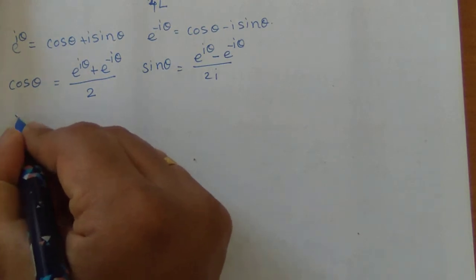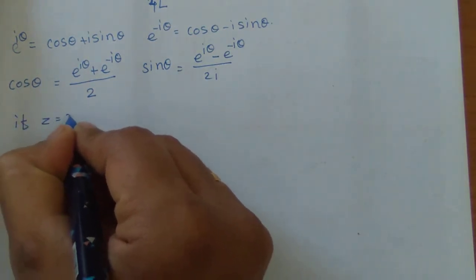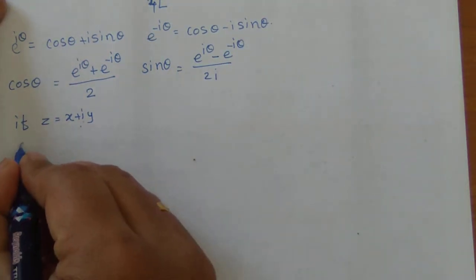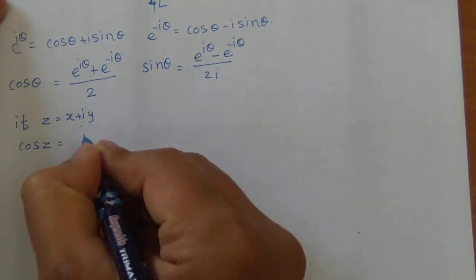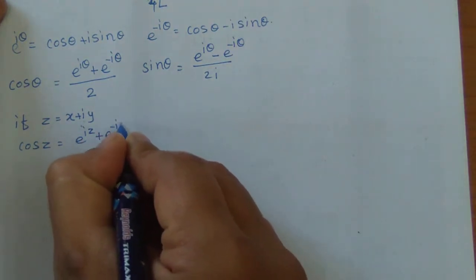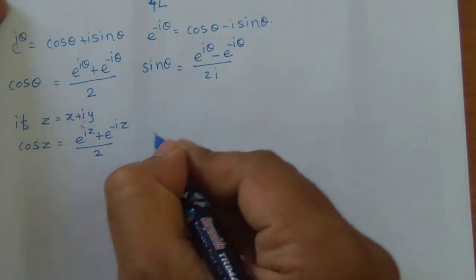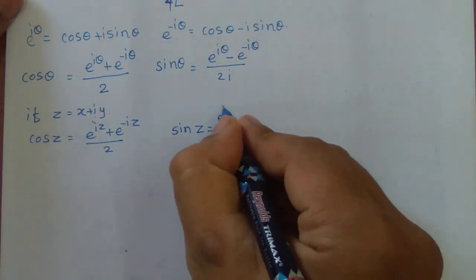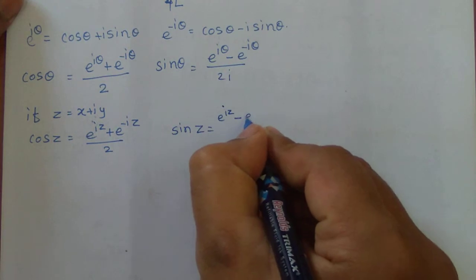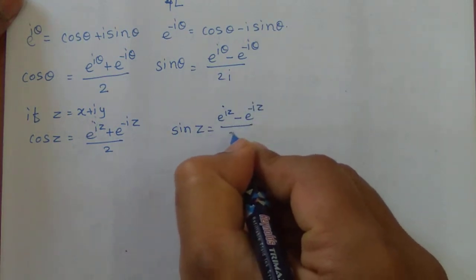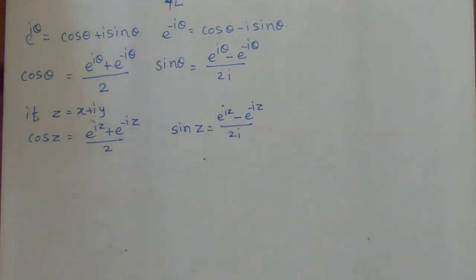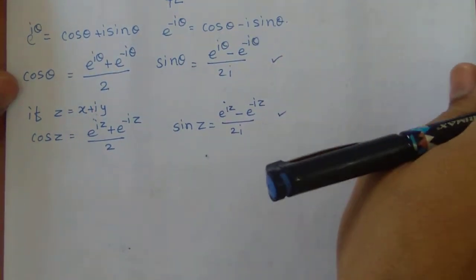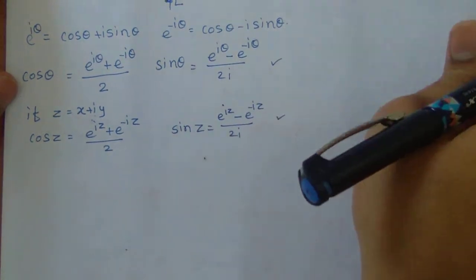Now if we take a complex number z = x + iy, then cos z is given as cos z = (e^(iz) + e^(-iz))/2, and sin z = (e^(iz) - e^(-iz))/(2i). Remember these two relations: one is Euler's relation and the second is the circular functions of the complex number.